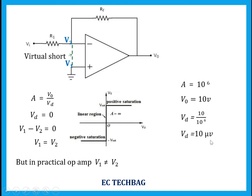That is 10 microvolts. This 10 microvolt value is very very small, so we can treat it as approximately 0 volts. Therefore VD is approximately equal to 0 volts, and V1 is approximately equal to V2.